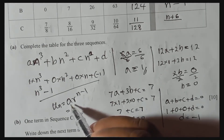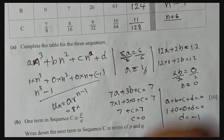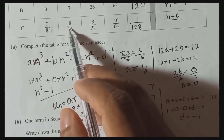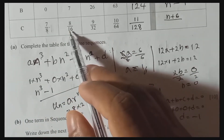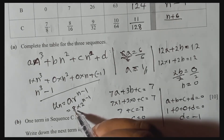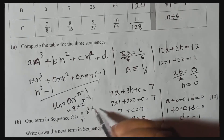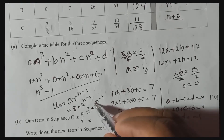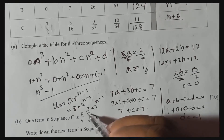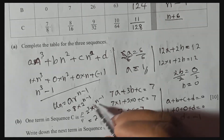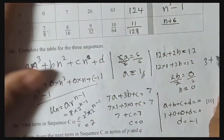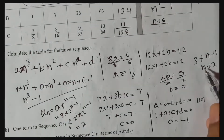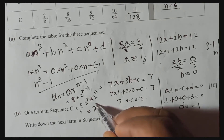We can simplify 8 × 2^(n−1) by writing 8 as 2³: so we get 2³ × 2^(n−1). When multiplying same bases, we add the indices: 3 + (n − 1) = n + 2. Therefore the denominator nth term simplifies to 2^(n+2).